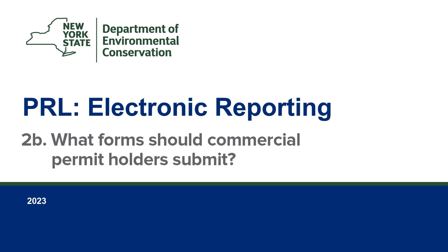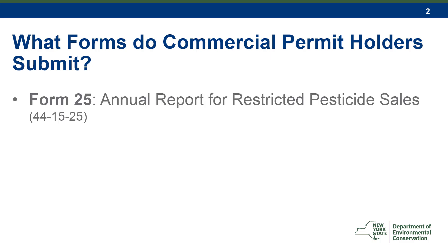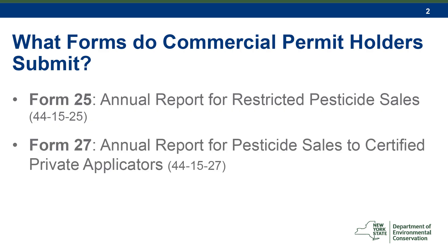This is the second video of a six-part series on PRL pesticide reporting. This video will cover what records commercial permit holders must include in their annual report and which forms to use for reporting. There are two forms that commercial permit holders should be familiar with before submitting a report: first is Form 25, or the Annual Report for Restricted Pesticide Sales, and second is Form 27, or the Annual Report for Pesticide Sales to Certified Private Applicators. We will go over which of these forms a commercial permit holder should use to report their sales throughout this video.